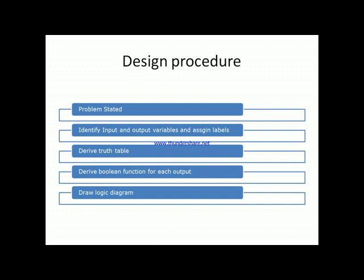The input variables can be m and the output variables can be n. Once the truth table is derived, for every output variable we have to derive the Boolean function. Once the simplified Boolean function is derived, we draw the logic diagram.